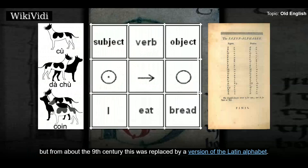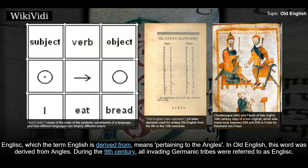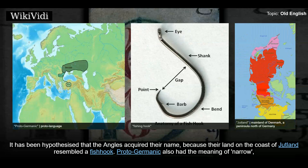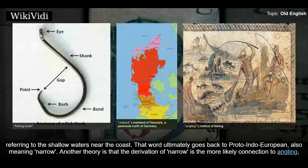The oldest Old English inscriptions were written using a runic system. The term 'English' is derived from 'Angles,' meaning pertaining to the Angles. In Old English, this word was derived from Angles. During the 9th century, all invading Germanic tribes were referred to as Anglish. It has been hypothesized that the Angles acquired their name because their land on the coast of Jutland resembled a fishhook. Proto-Germanic also had the meaning of narrow, referring to the shallow waters near the coast.